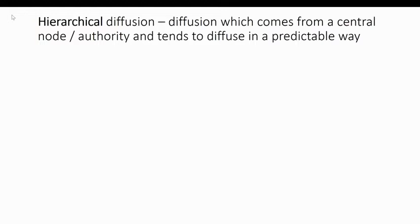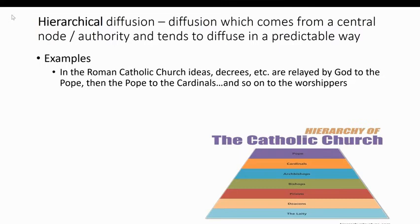What makes hierarchical diffusion distinct from stimulus diffusion and contagious diffusion is that the idea moves from a predictable node in a very predictable way — typically in a hierarchy from an authority downward. A great example is the Roman Catholic Church, where an idea starts with the Pope, then spreads to cardinals, to archbishops, and all the way down to worshippers. You also see this in a company where the CEO tells the board of directors, who tell regional managers, who tell store managers, who tell employees.